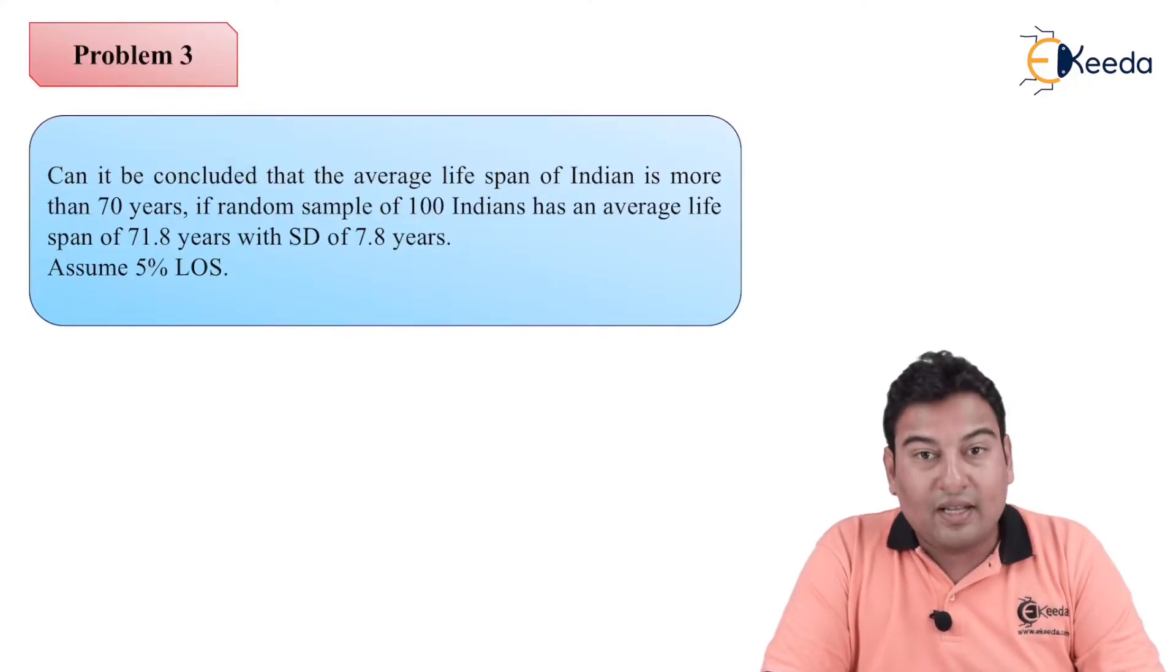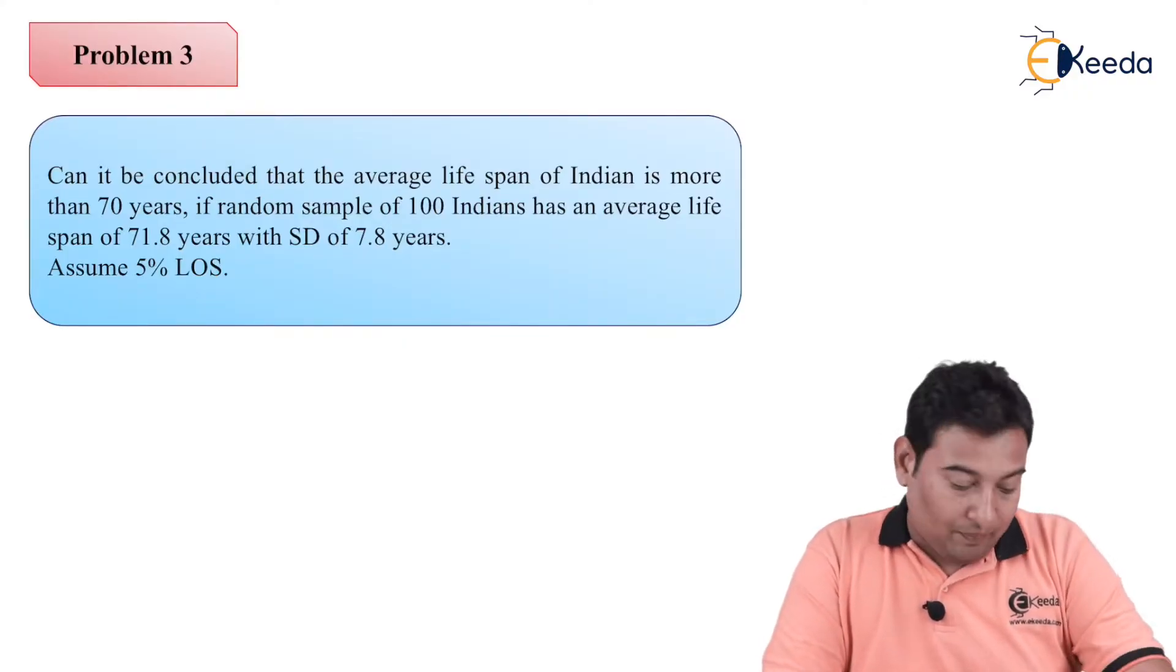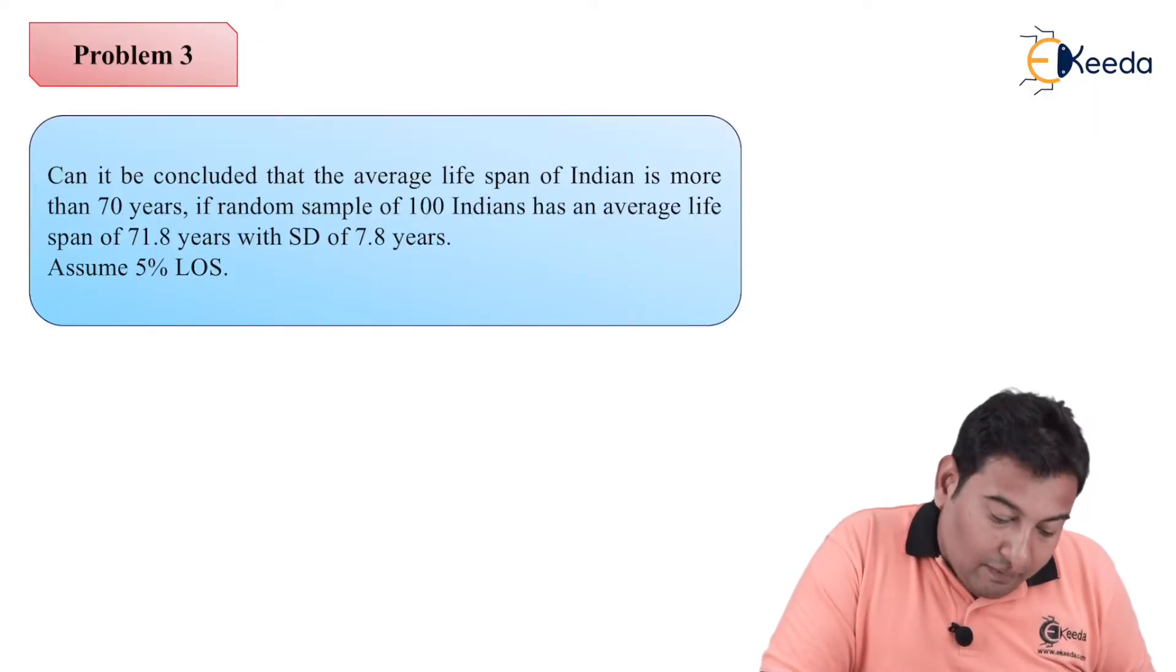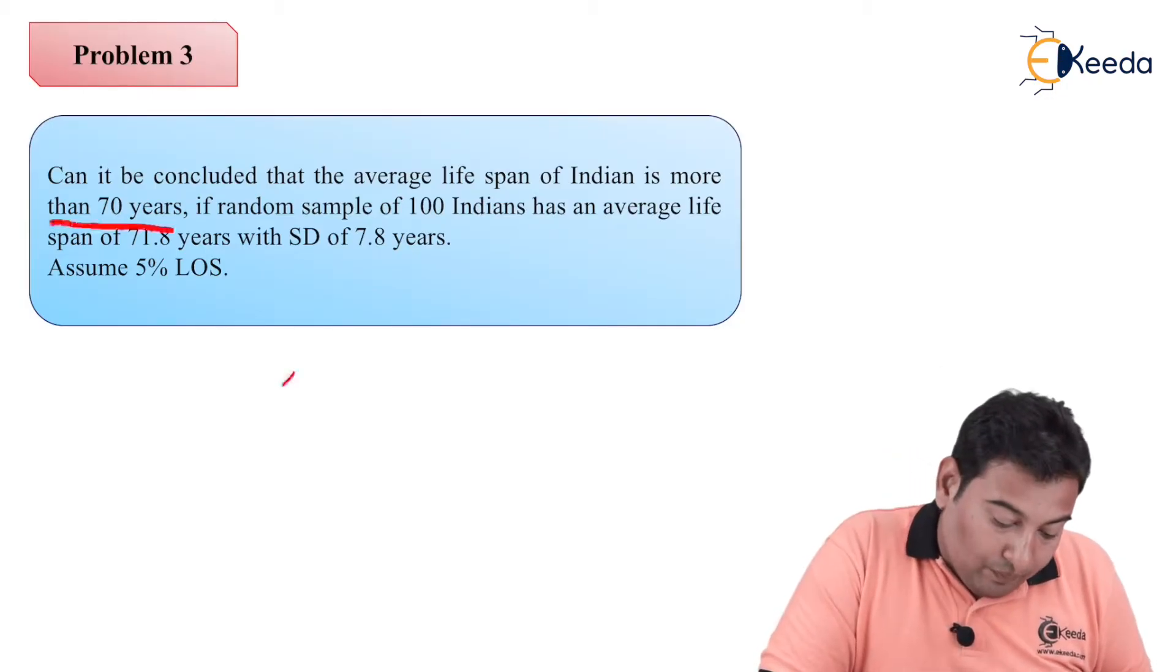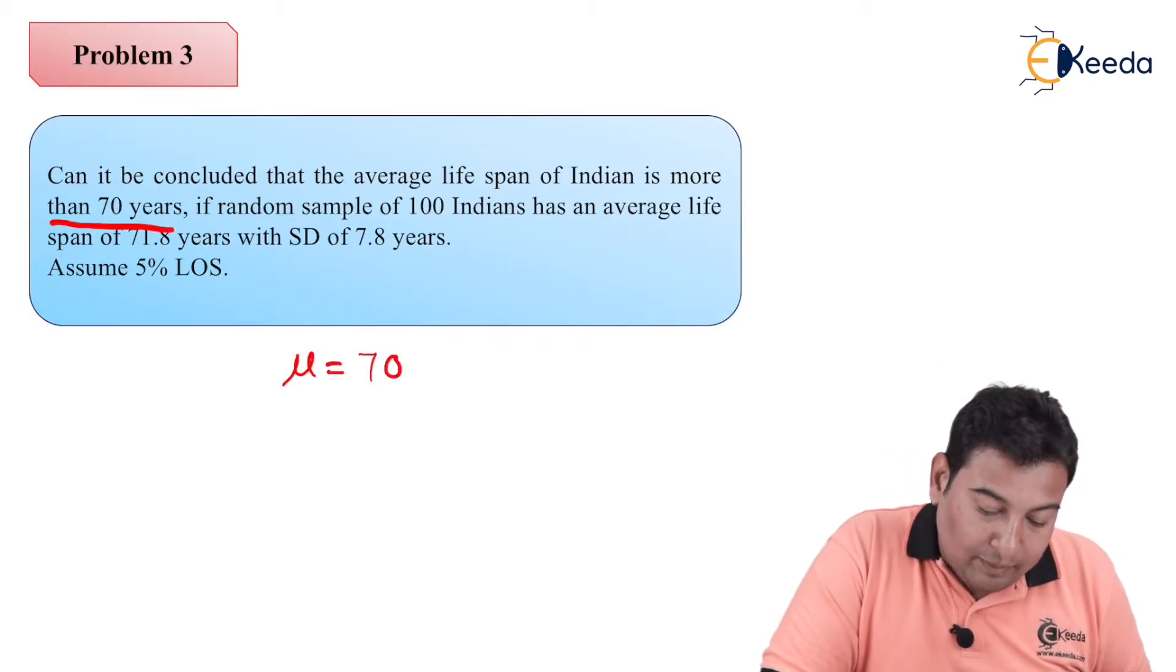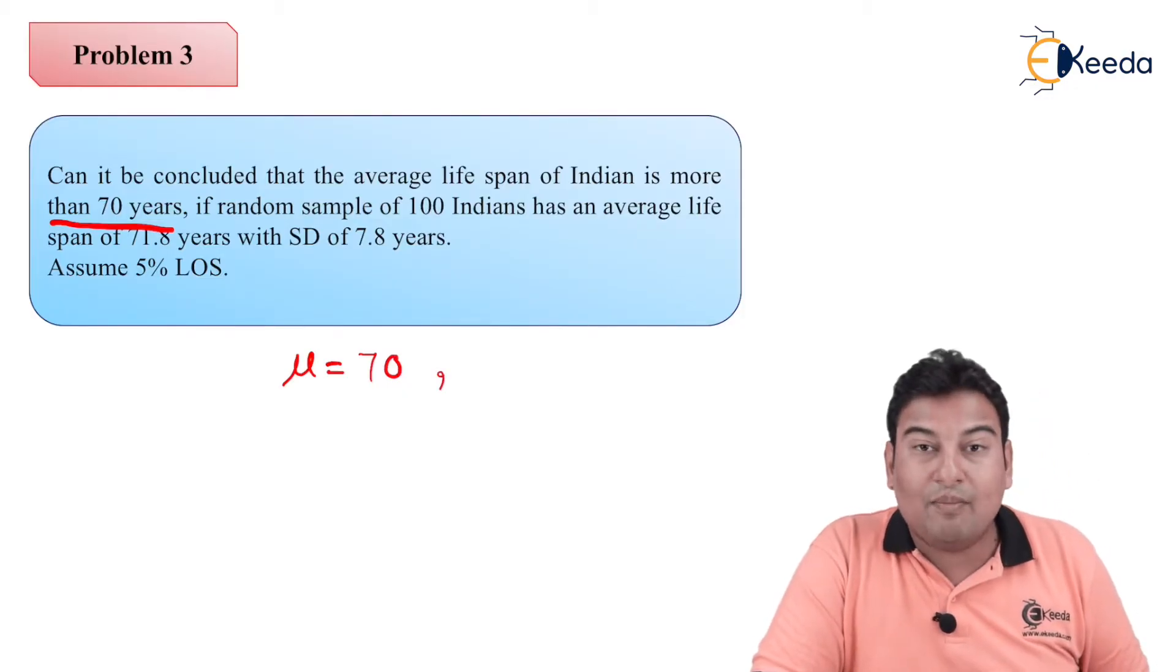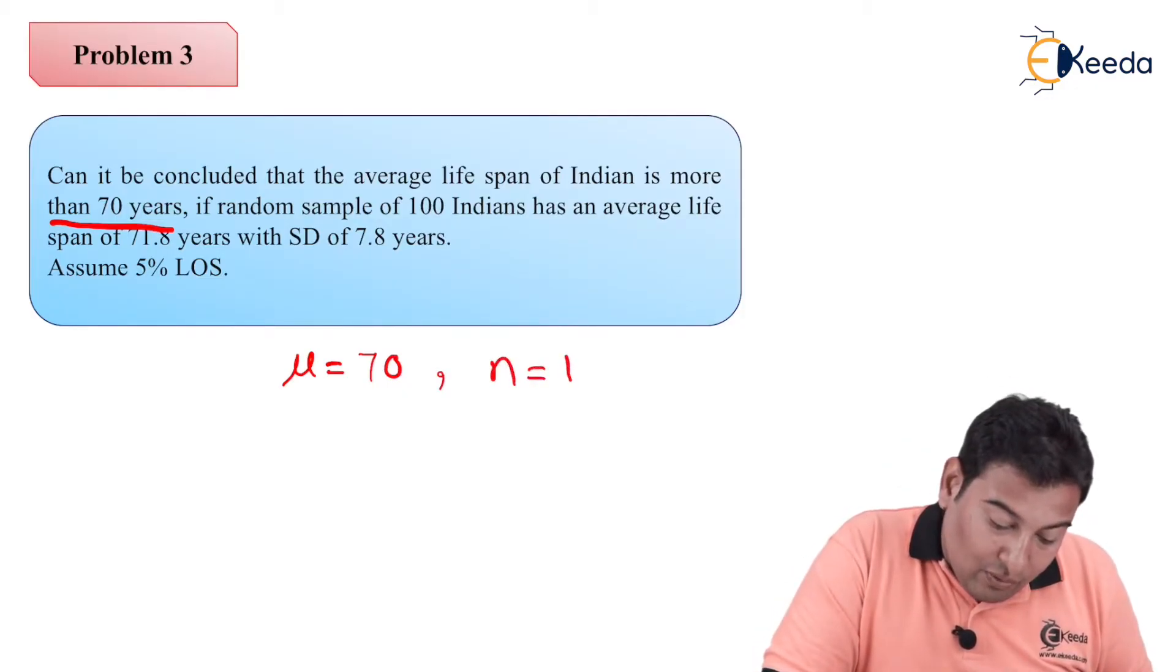Let us identify the data given in the problem. Can it be concluded that the average lifespan of an Indian is more than 70 years? So this is the general claim. This is μ = 70. If random sample of 100 Indians, n is equal to 100.